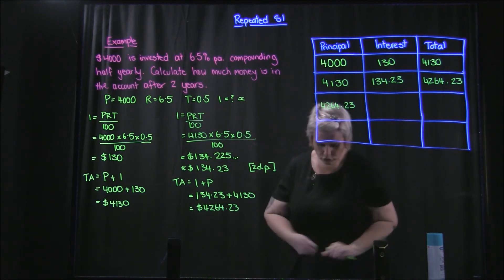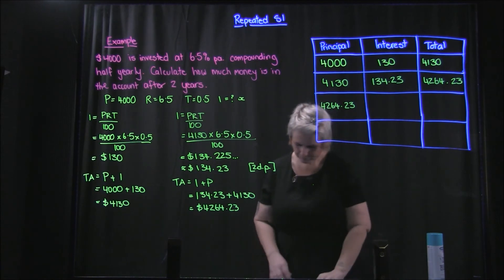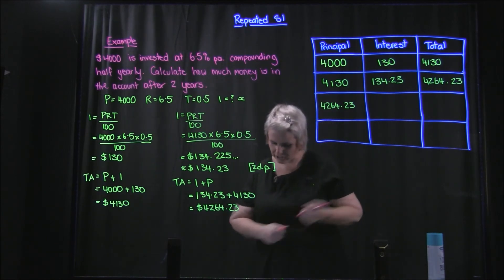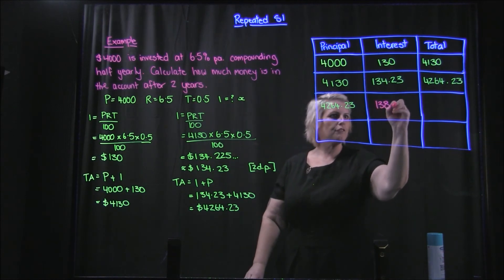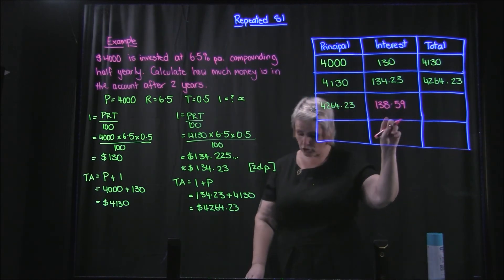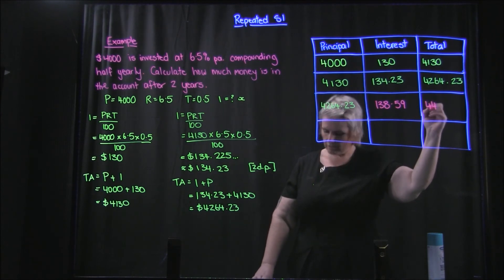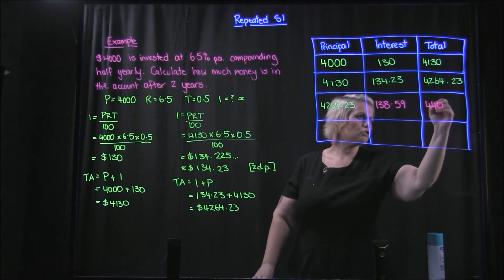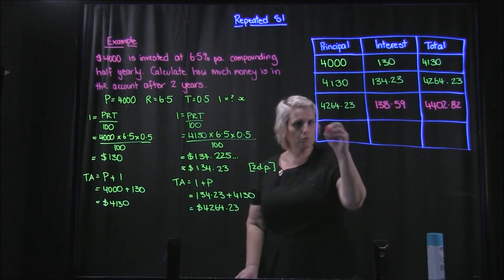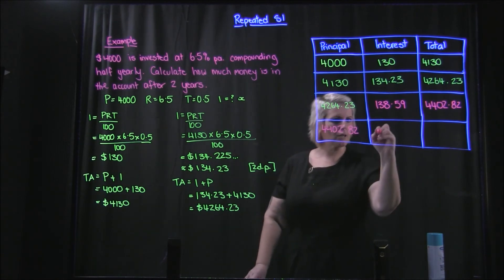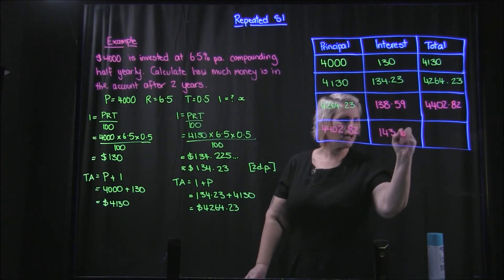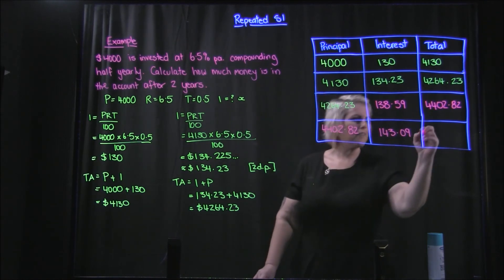Okay, so you should have worked out along the way, let's change again, $138.59, again a bit more of a jump this time, which gives you $4402.82. Then you would transfer that down: $4402.82. And you would end up with $143.09 for your interest and then $4545.91.